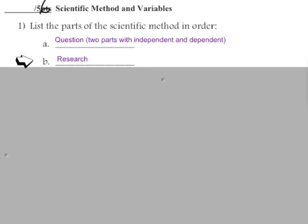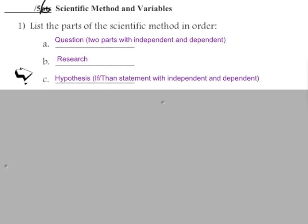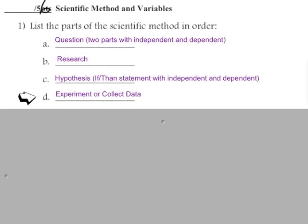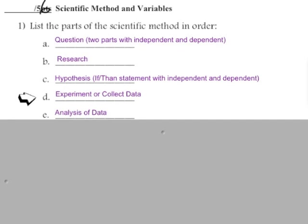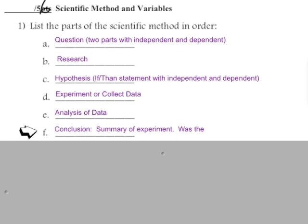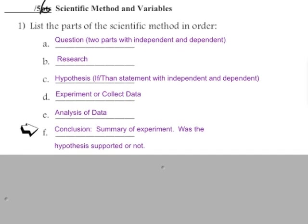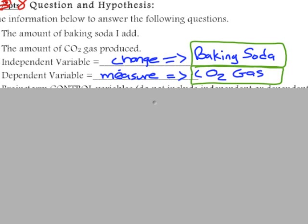Then there's hypothesis, which does need to be an if-then statement with the independent and dependent variable. Then you perform the experiment — testing how changing your independent variable affects your dependent variable. Then analysis, where you do graphs, averaging, ranking, sorting on your raw data. Finally, a conclusion summarizes the experiment, whether your hypothesis was supported or not. We don't prove anything — data will support or not support your hypothesis. You can also note patterns, sources of error, and ways to improve.